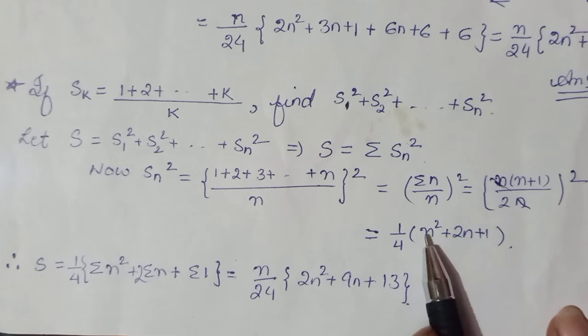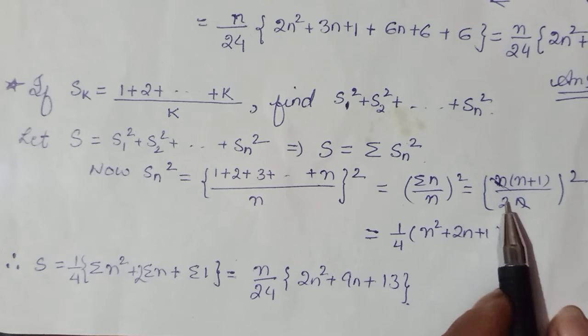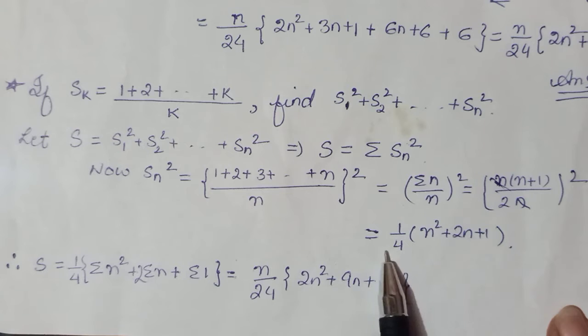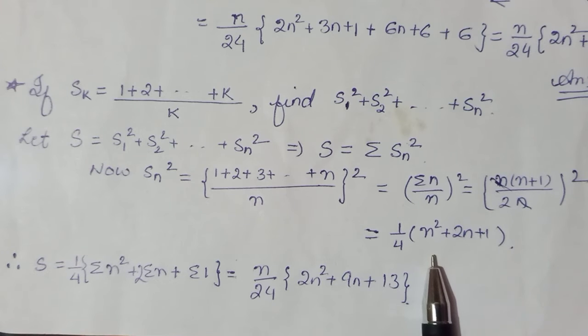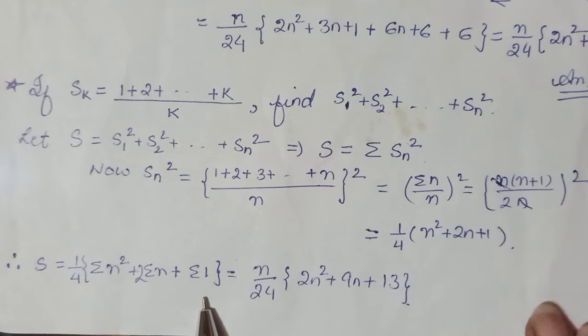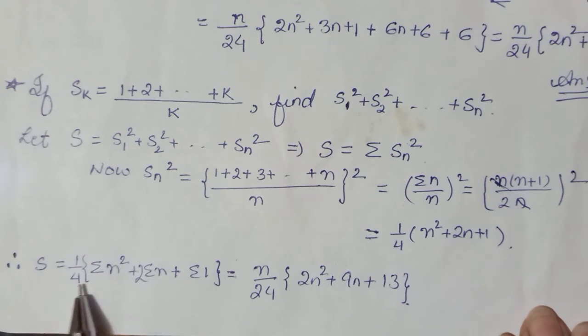So (a+b)² which is n² + 2n + 1, and 2 is square is 4. So yeh ab aapka Sn nth term form hua hai.